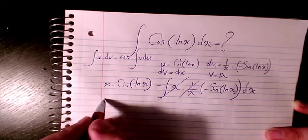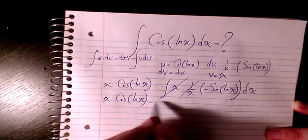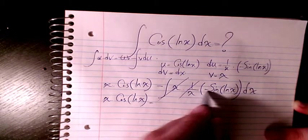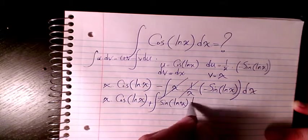These two cancel out. It will be x times cosine ln x minus, with this minus will be positive, sine ln x dx.